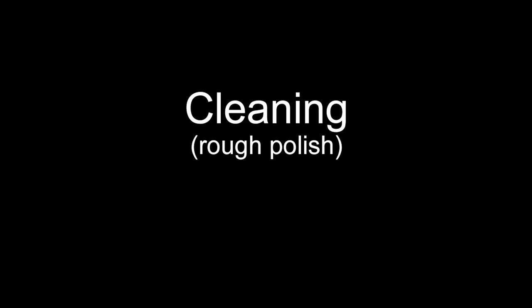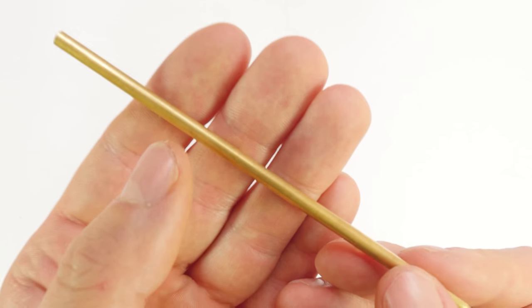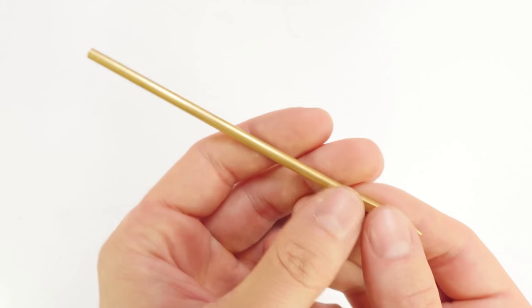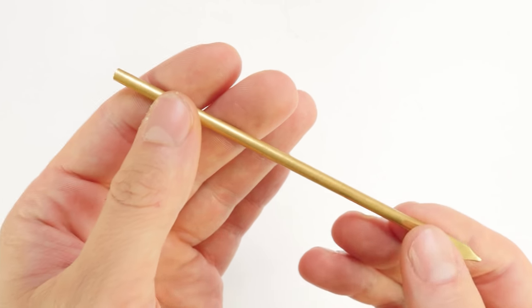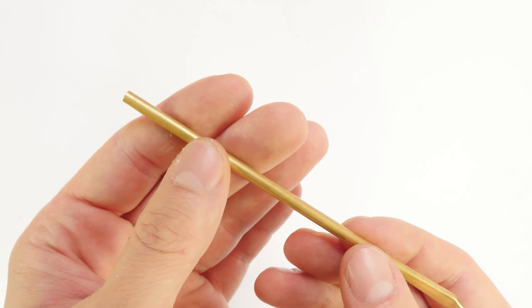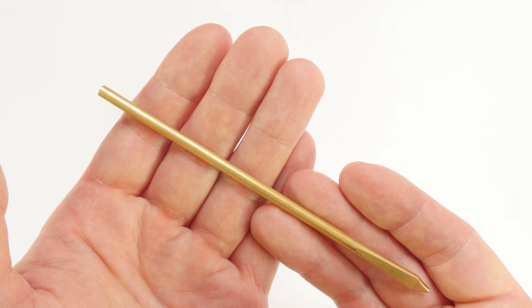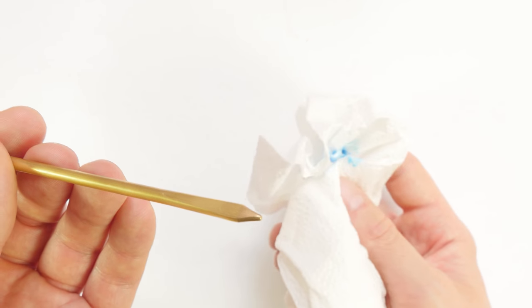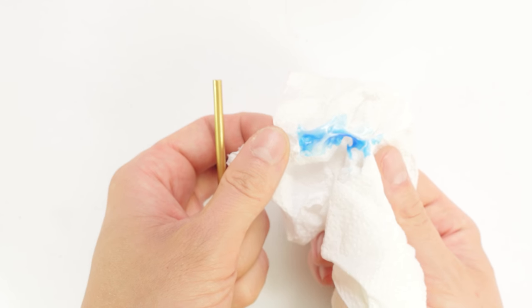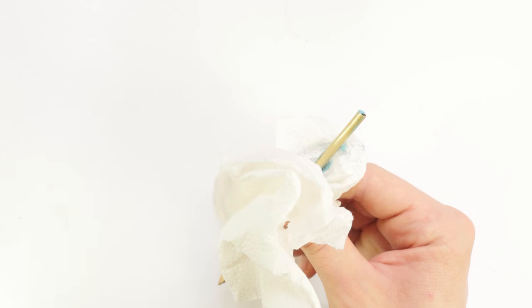The first step is going to be to clean our lacing needle. Now there are many substances that you can use for cleaning metals, but the one that's probably the most available is toothpaste. So what I do is I grab a piece of paper and apply some toothpaste on it.